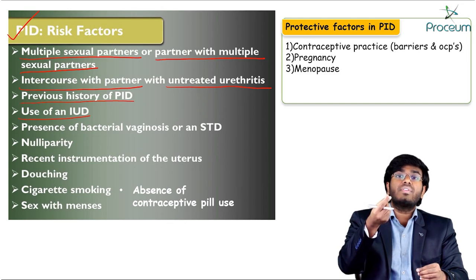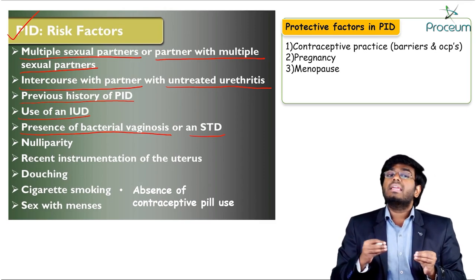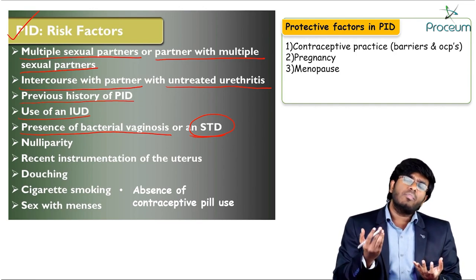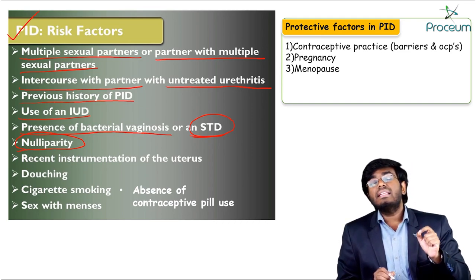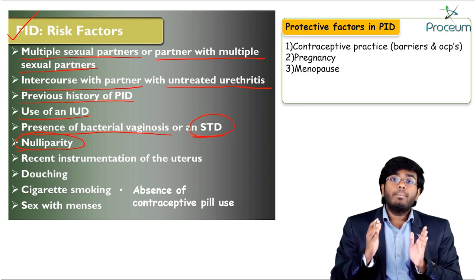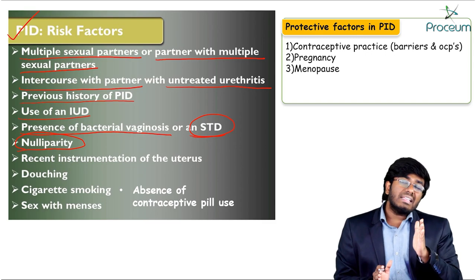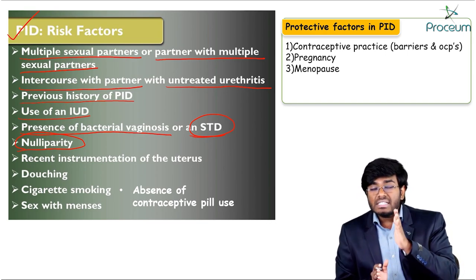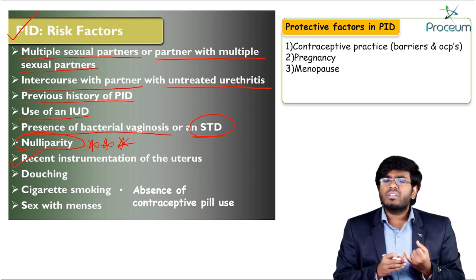Additional risk factors include: presence of bacterial vaginosis or an STD (such as Gonococci or Chlamydia), which can ascend to cause PID; nulliparity — this is important, as nulliparity is a risk factor for PID while multiparity is a protective factor. This same relationship applies to uterine fibroids. Recent instrumentation of the uterus — such as D&C, IUD insertion, or HSG — also increases risk.